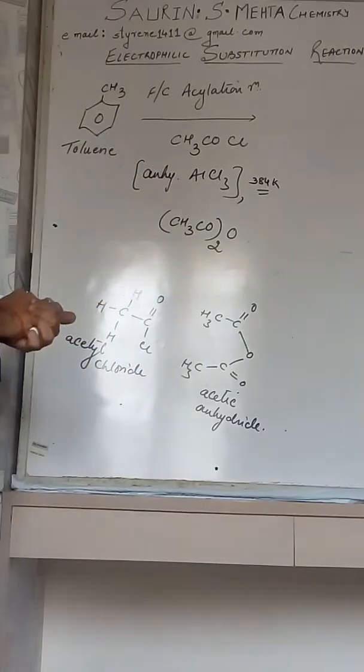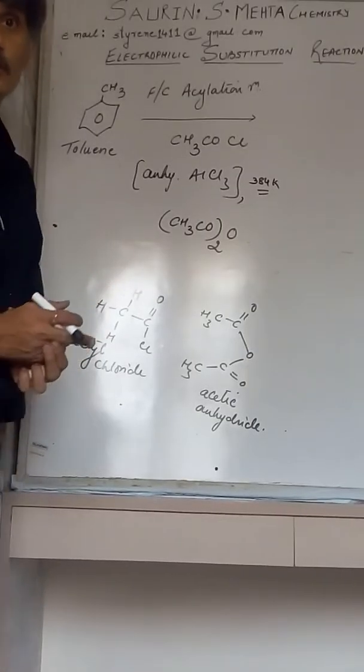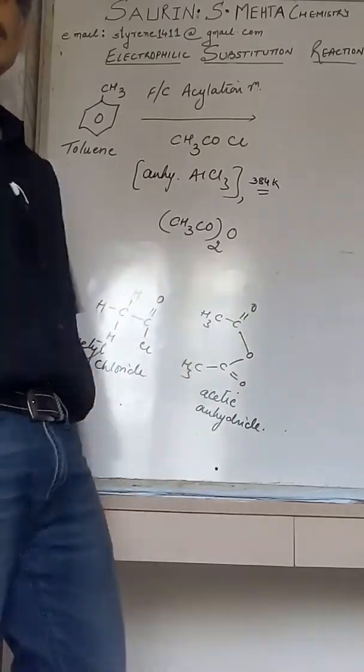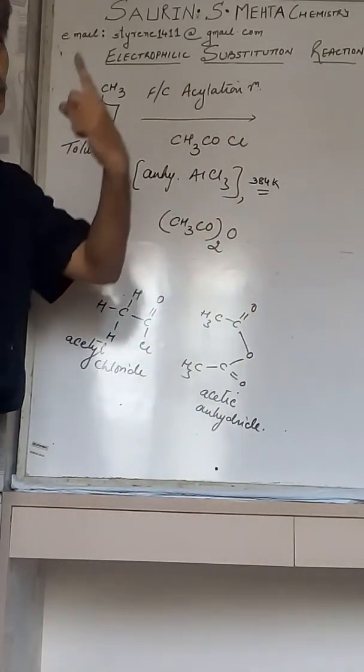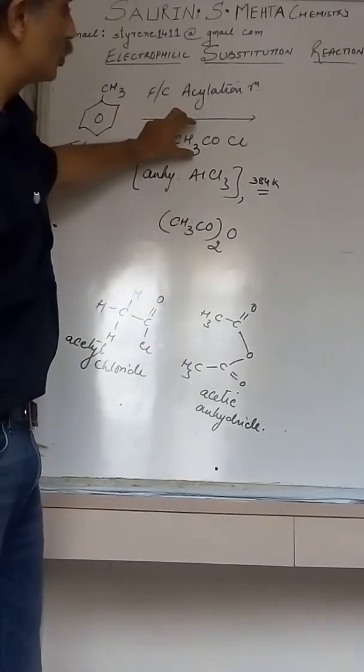This methyl group, as you know, is an ortho-para directing group. It is an electron donating group. So it directs the incoming group onto ortho and para positions. We expect the group which is going to get on the benzene nucleus on ortho and para position.